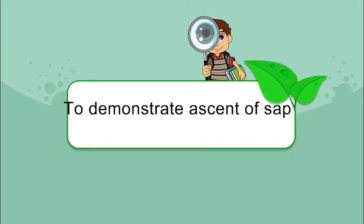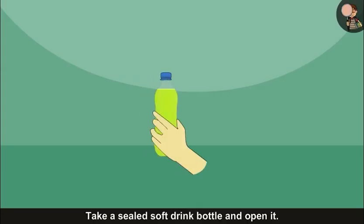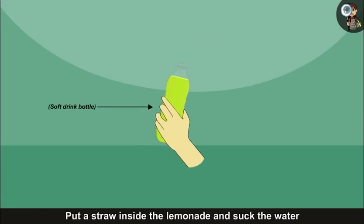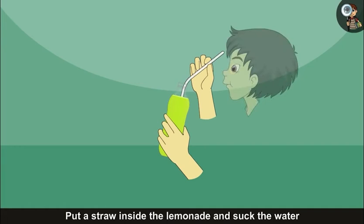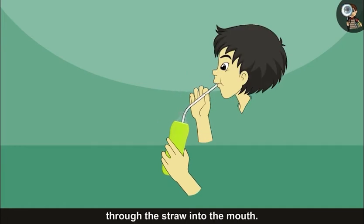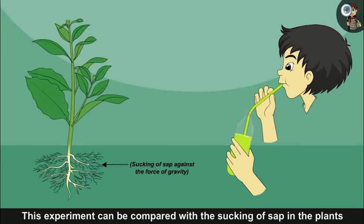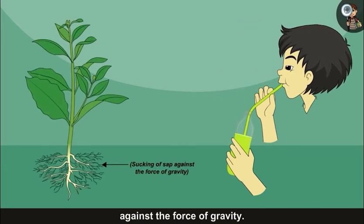To demonstrate ascent of sap, take a sealed soft drink bottle and open it. Put a straw inside the lemonade and suck the water through the straw into the mouth. This experiment can be compared with the sucking of sap in the plants against the force of gravity.